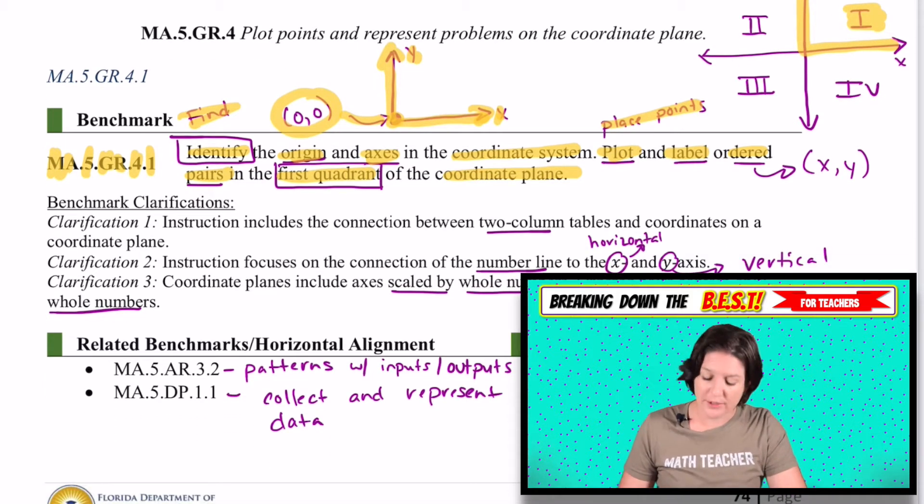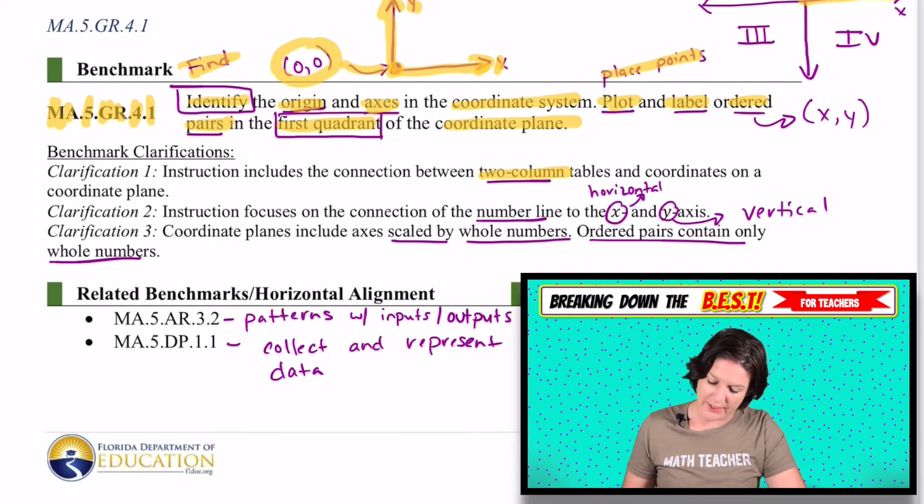Let's go over some of the benchmark clarifications. So this says that instruction includes the connection between a two column table and coordinates on the coordinate plane. So we'll be working with a two column table, which sometimes it's more than two columns, but we'll get there in a second.